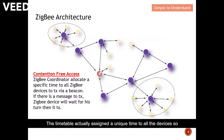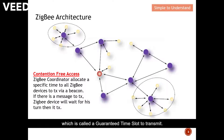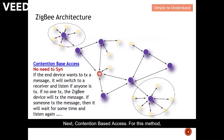The timetable assigns a unique time to all devices so there are no collisions of data. When the device receives the beacon, the beacon contains information about when its Guaranteed Time Slot is — that is the time to transmit. This is the first method, called contention-free access.